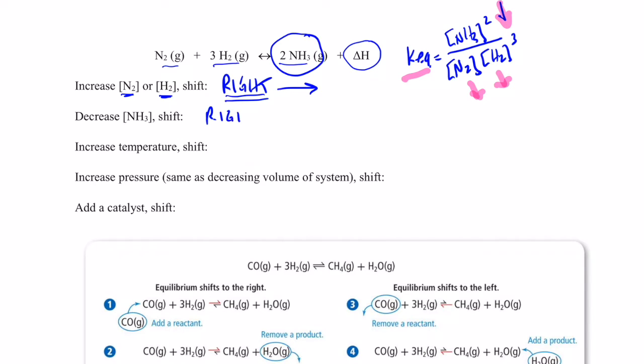Well, I have to make more product. I have to make more of what I just took away. So, in this situation, the equilibrium would also shift towards the right, and I would make more ammonia gas to compensate for the ammonia that I took out. That's how I would relieve the stress.